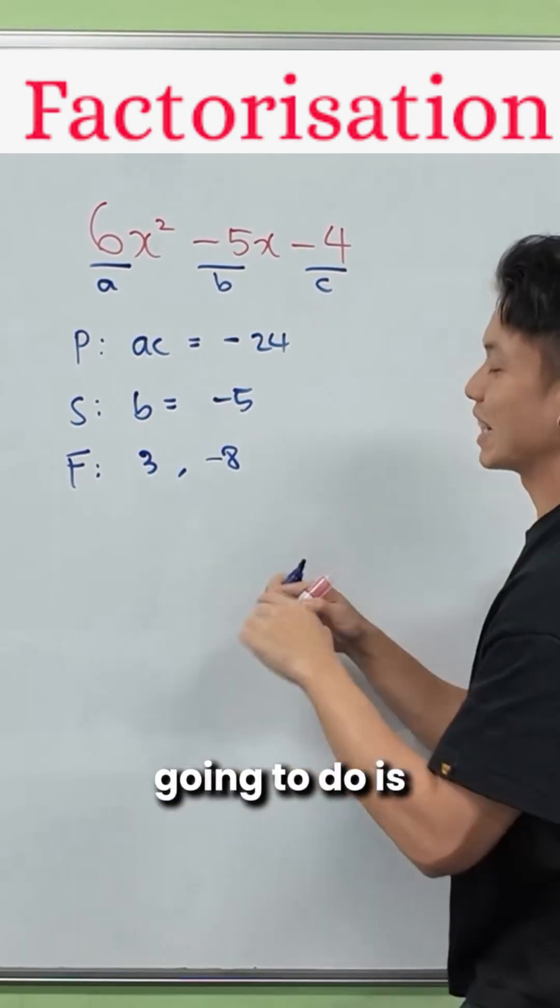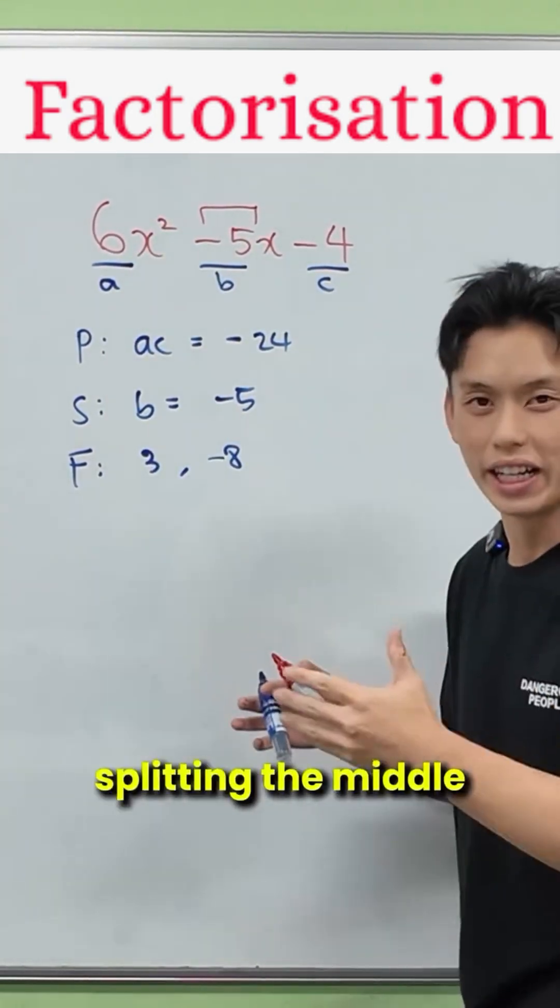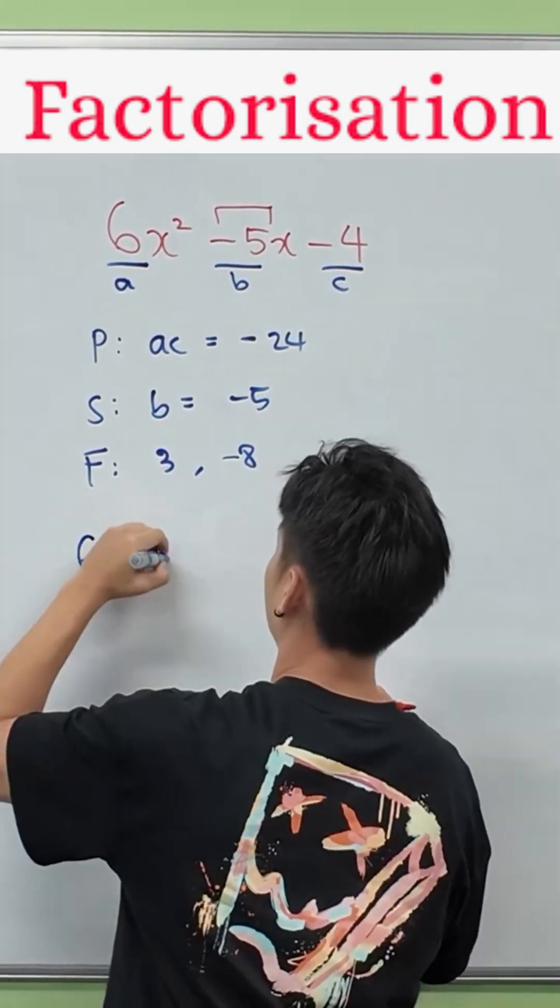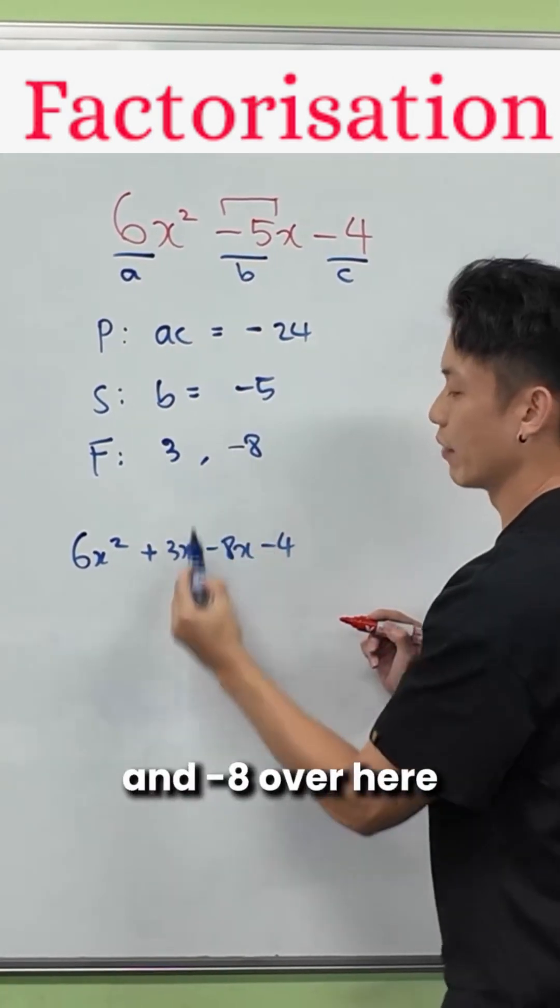What we are now going to do is take these two numbers and rewrite the middle term. It's called splitting the middle. Let me show you how it works. So notice that I've written a negative 5x using the numbers 3 and negative 8 over here.